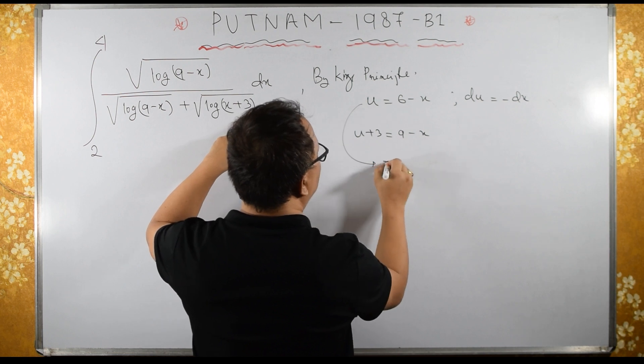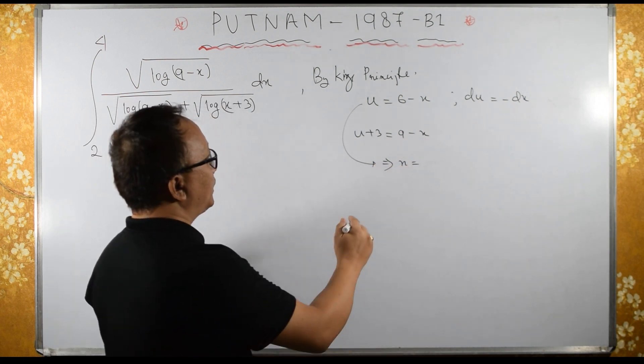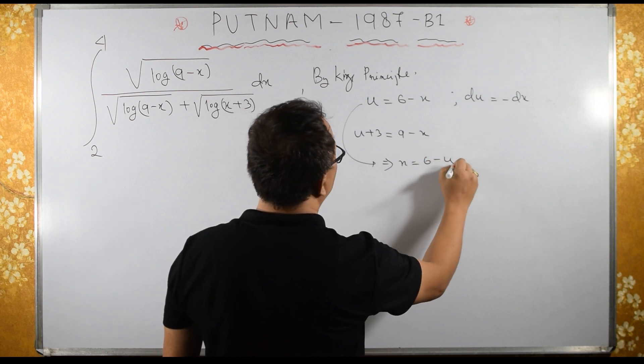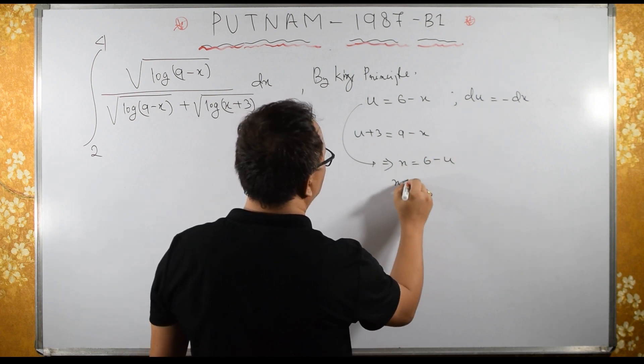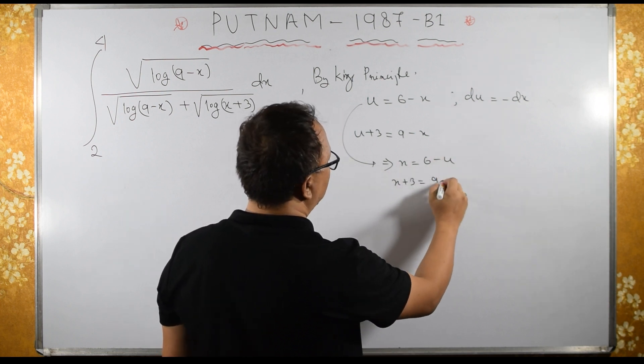So u plus 3 will be 9 minus x, and I need x plus 3. From here, what is x? x equals 6 minus u, then x plus 3 equals 9, adding 3 on both sides, 9 minus u.